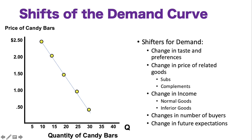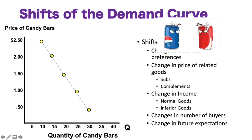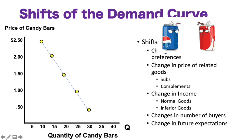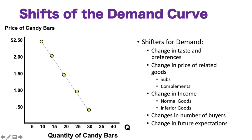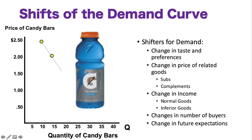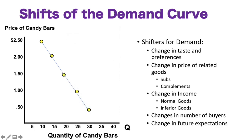Second: change in price of related goods — two categories: substitutes and complements. Substitutes are things you buy in place of one another. For example, if you're at a restaurant and ask for a Coca-Cola but they only have Pepsi, and you're indifferent and drink Pepsi instead, that's a substitute. Similarly, if a store is out of Gatorade and you buy Powerade instead, Powerade is a substitute. You have to be indifferent between the two products for them to be substitutes.